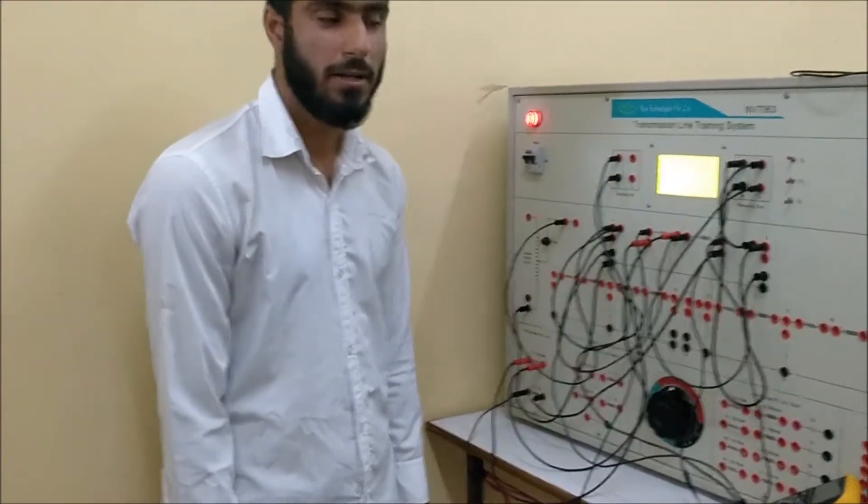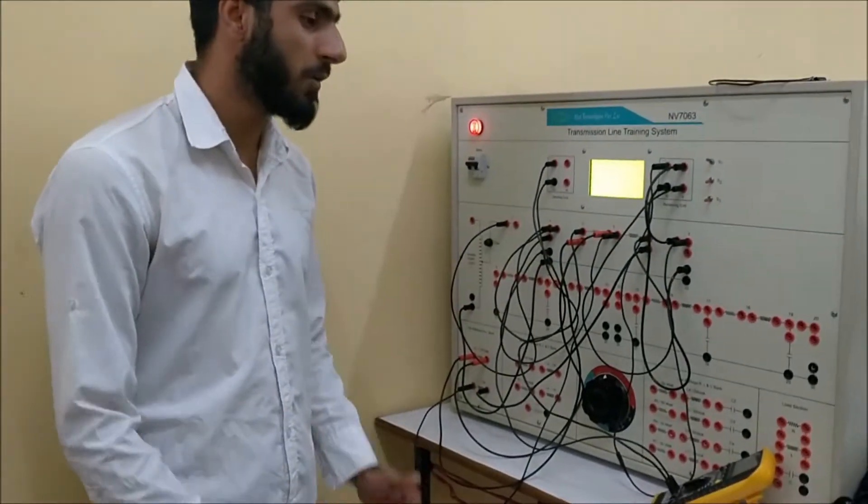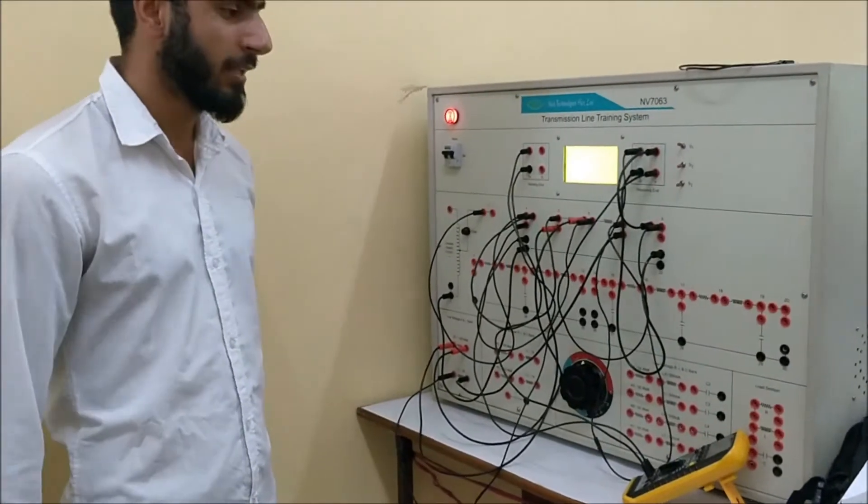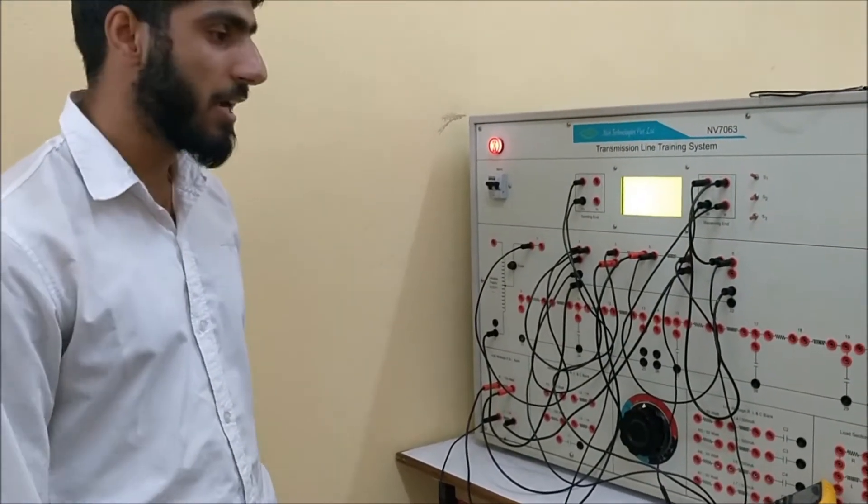Now my objective is to find the transmission line parameters of the power system. Before going into the experimental, we will find the equations governing the transmission. These equations are input equations, actually the input equations of current and voltage.